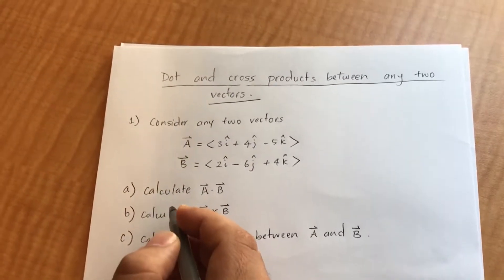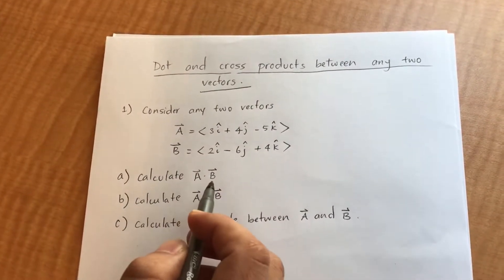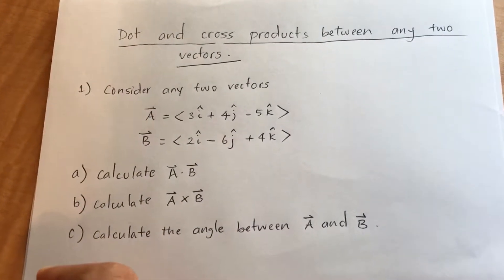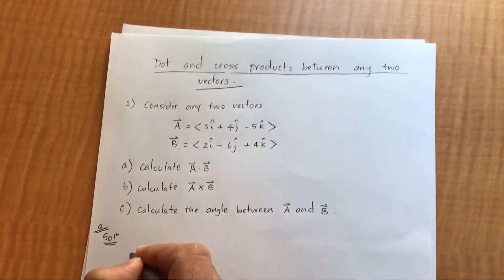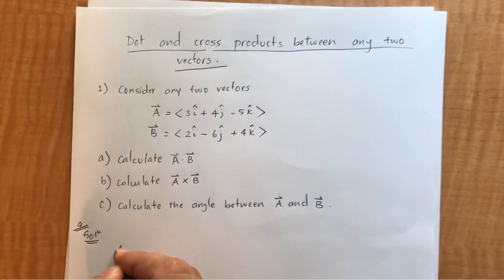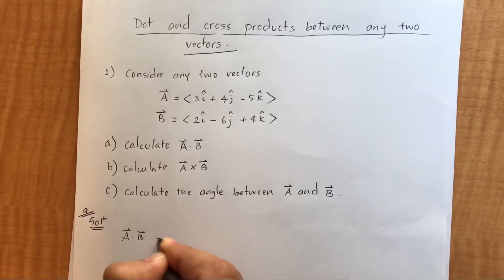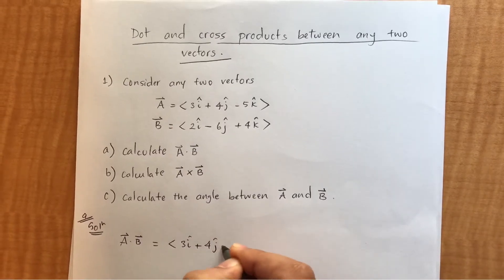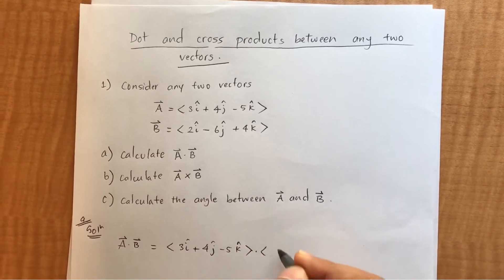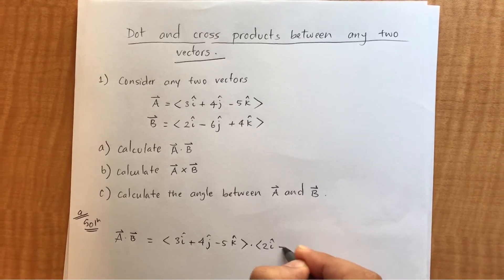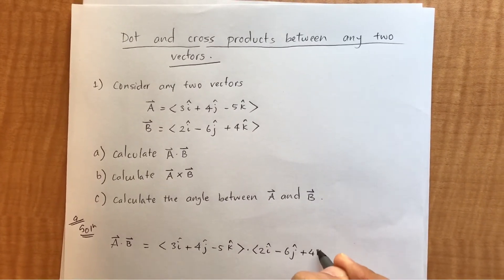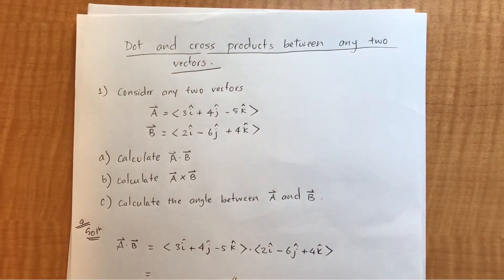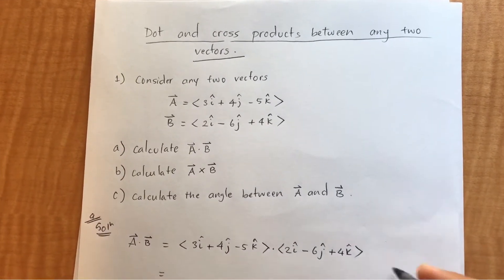From the first question, we need to calculate the dot product between vectors a and b. So let's start with problem a. We can write it as (3i + 4j − 5k) dotted with (2i − 6j + 4k). You have to be careful about this problem.